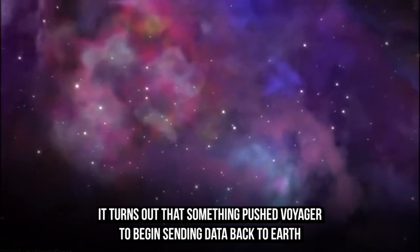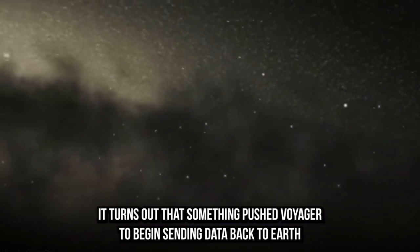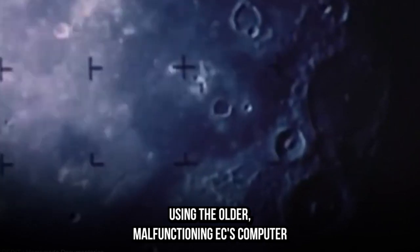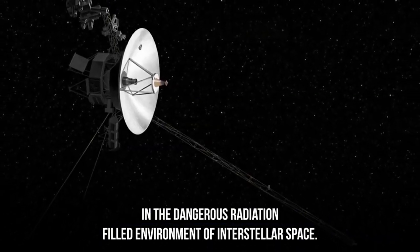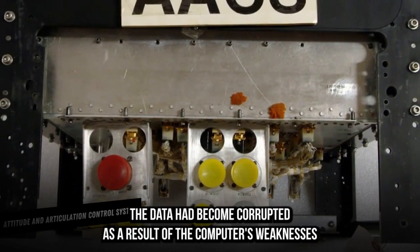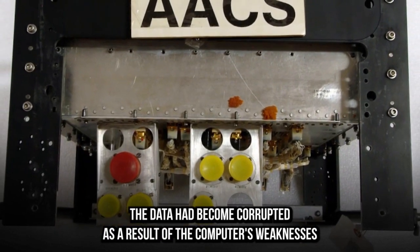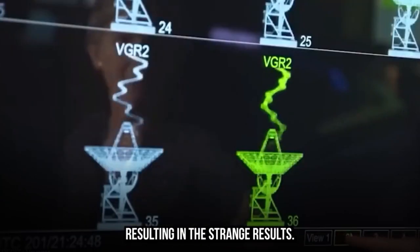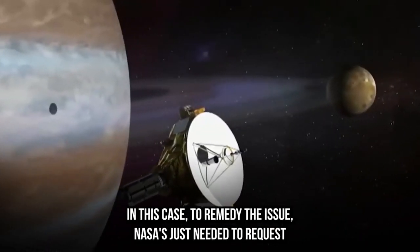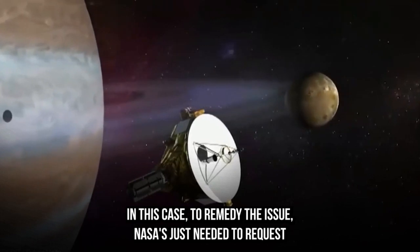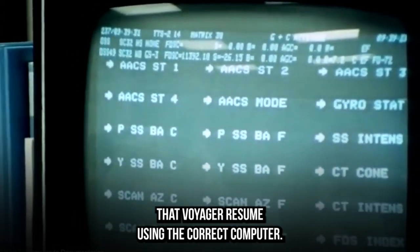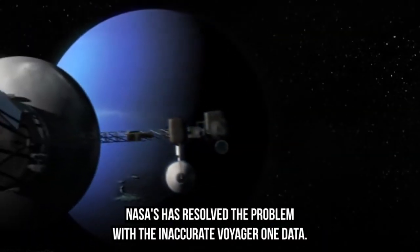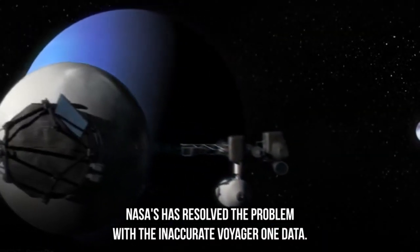It turns out that something pushed Voyager to begin sending data back to Earth using the older malfunctioning AACS computer in the radiation-filled environment of interstellar space. The data had become corrupted as a result of the computer's weaknesses, resulting in the strange results. The solution was straightforward. NASA just needed to request that Voyager resume using the correct computer. NASA has resolved the problem with the inaccurate Voyager 1 data.